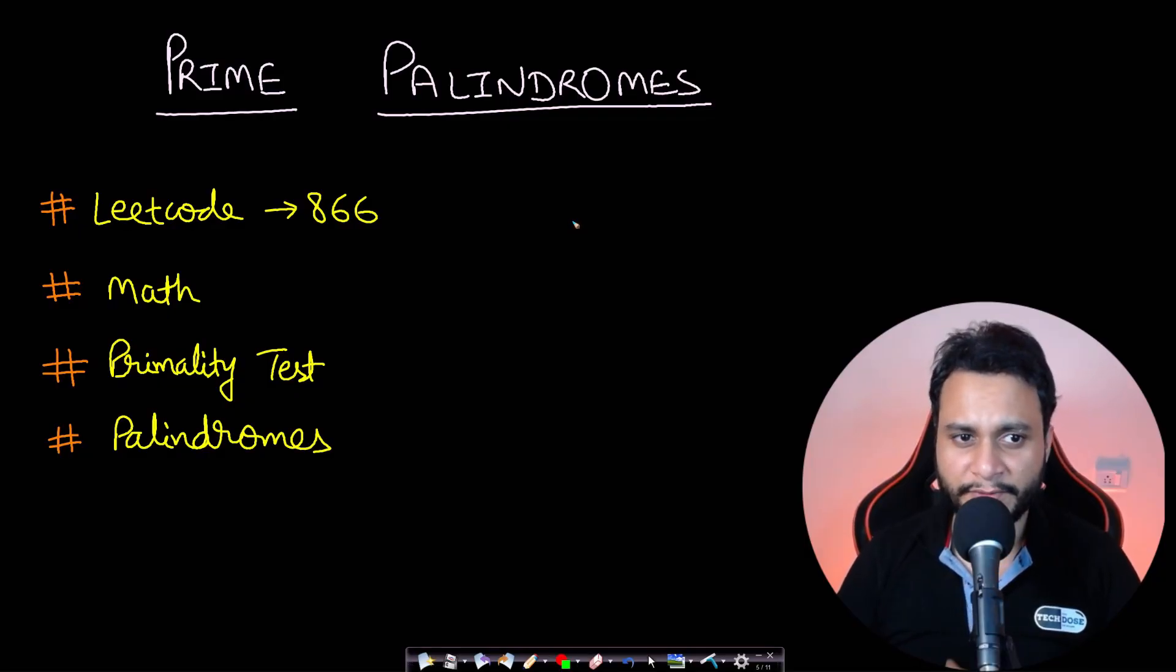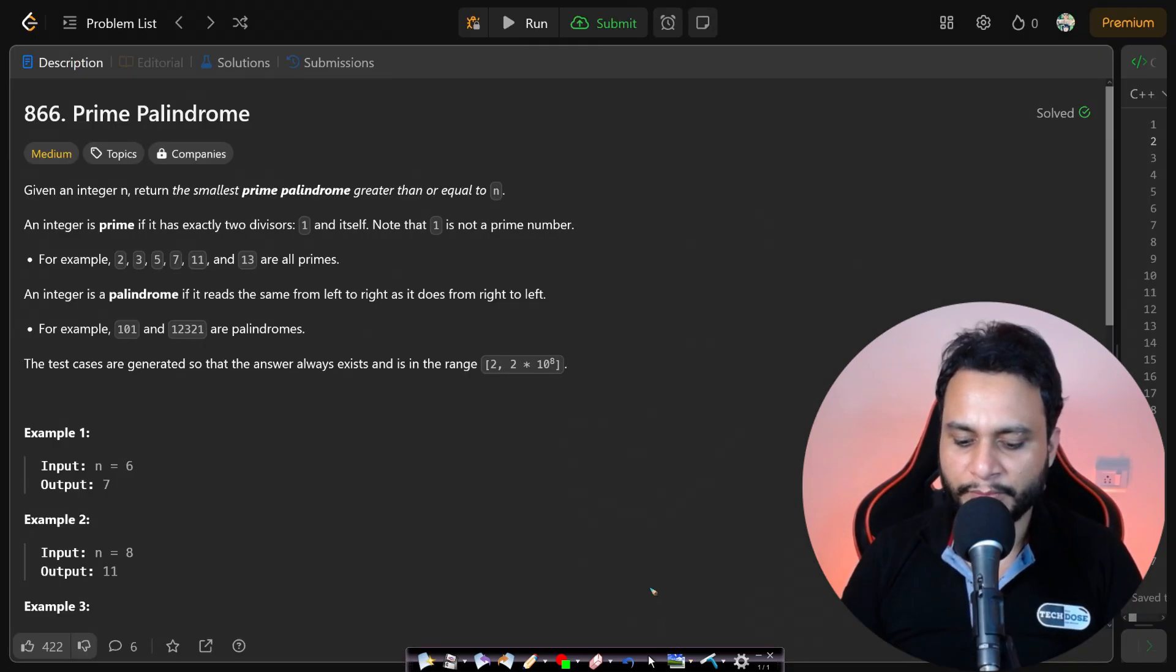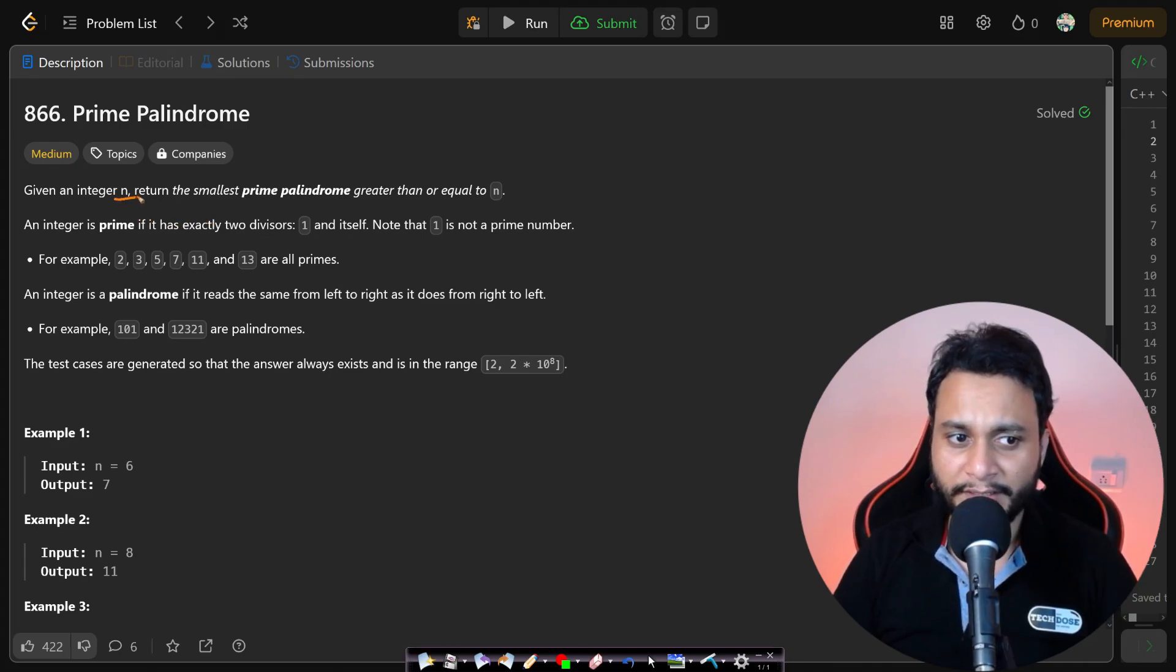Hello guys, welcome back to TechDose. In this video we'll see the Prime Palindrome problem from LeetCode number 866. Let's look at the problem statement. Given an integer n, return the smallest prime palindrome greater than or equal to n.